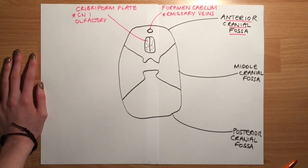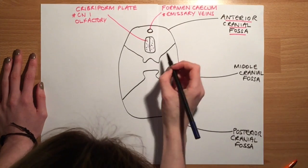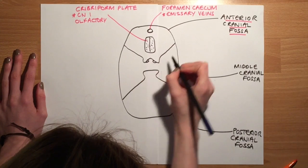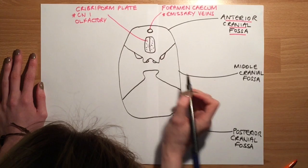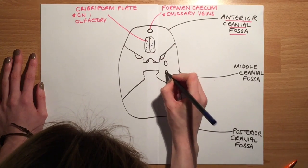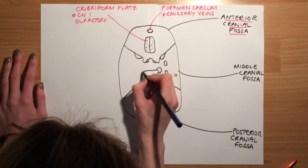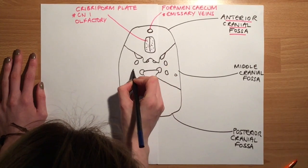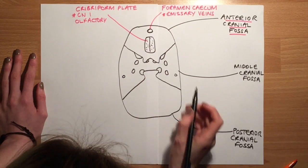Next we are going to discuss the middle cranial fossa and draw the foramina found here. There are six: first the optic canal, then the superior orbital fissure, next the foramen rotundum, the foramen ovale, foramen spinosum, and the foramen lacerum. Each foramina of the middle cranial fossa has a partner found on the opposite side of the skull.